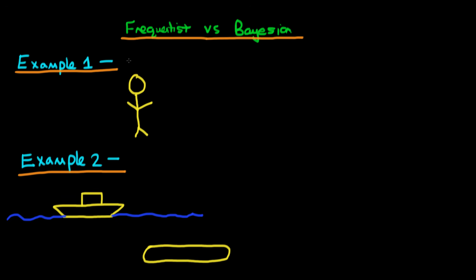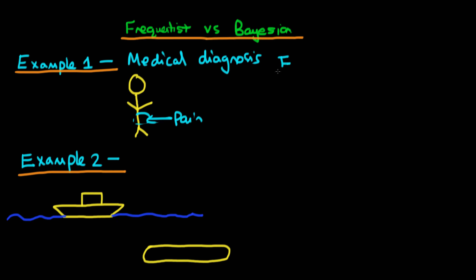The first example we're going to be talking about is medical diagnosis. If we assume that we go to see a doctor and we have some sort of pain in our stomach, we can think about how the doctor would approach the situation if they were a frequentist versus if they were a Bayesian doctor — one which applies Bayesian statistical methods to identify what's causing this pain.